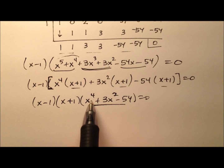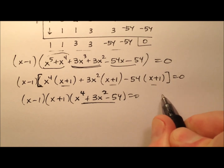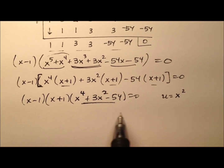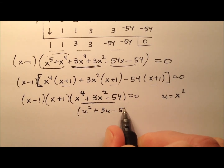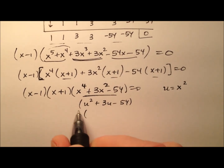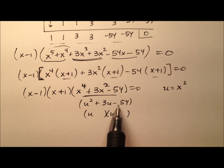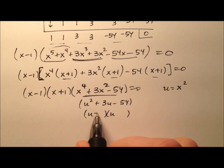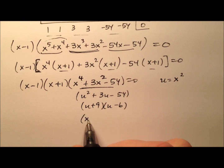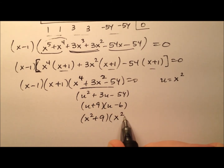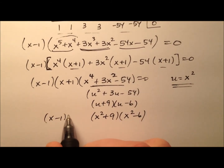This expression looks like it'll factor nicely — it has a quadratic nature to it. Let U equal x squared and do a U substitution. This becomes U squared plus 3U minus 54, which factors nicely since the leading coefficient is 1. I need two factors that multiply to negative 54 and add to positive 3: positive 9 and negative 6. Replacing U with x squared again gives us the factored form. That was just a quick U substitution to factor that piece clearly.